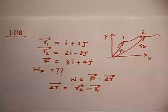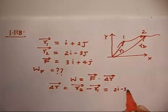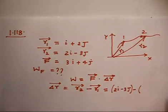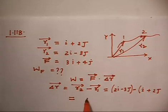So r2 minus r1, r2 is 2i minus 3j, minus r1 which is i plus 2j. So this is i minus 5j.